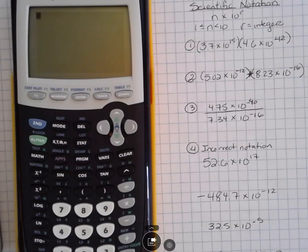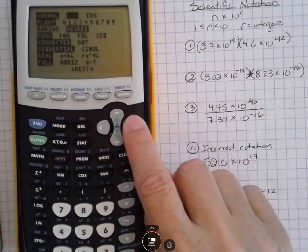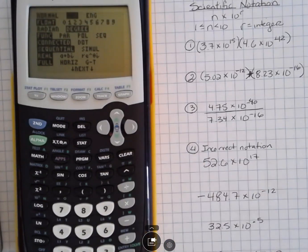For scientific notation, you can put it into scientific notation mode. That would be clicking on the mode, and then on the top value there, go one to the right and hit enter, and that's going to give your answers in scientific notation mode.